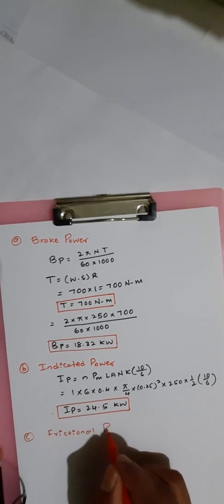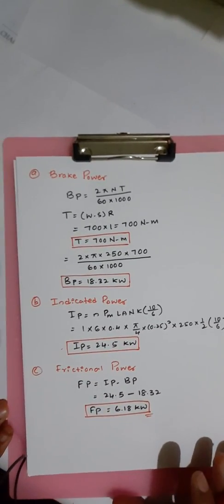Next we find the frictional power. The equation is FP equals IP minus BP. IP is 24.5 kilowatt and BP is 18.32 kilowatt. So FP equals 24.5 minus 18.32, which gives frictional power FP equal to 6.18 kilowatt.